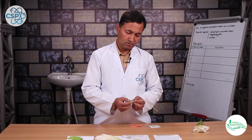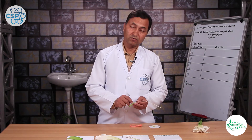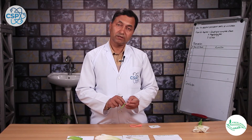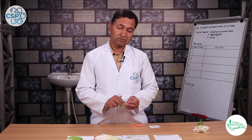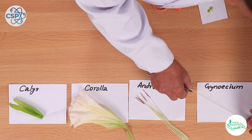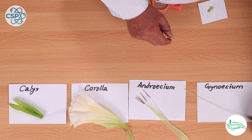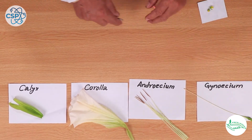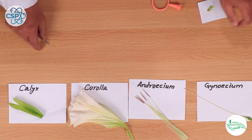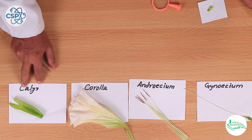This is an ovule and a female gamete. I will keep this in mind. The function of this part is Calyx.